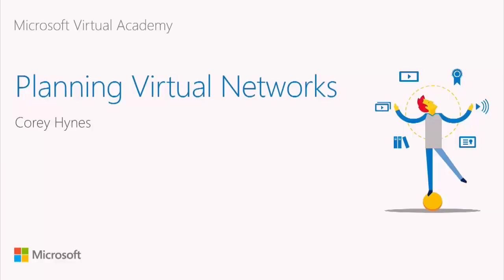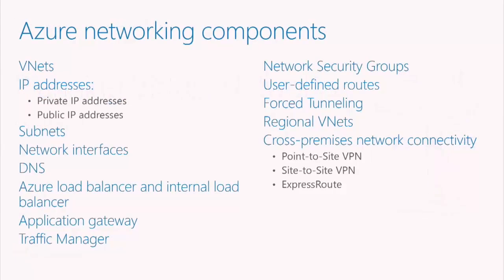The first module is planning virtual networks. To begin planning virtual networks, you want to start with an understanding of all the components that make up Azure virtual networking. We'll begin with VNets. VNets, or virtual networks, are the basic building block. A VNet is a container for all other networking objects, including things like IP addresses, which can be private or public, and subnets, which are used to group addresses into different logical subnets.